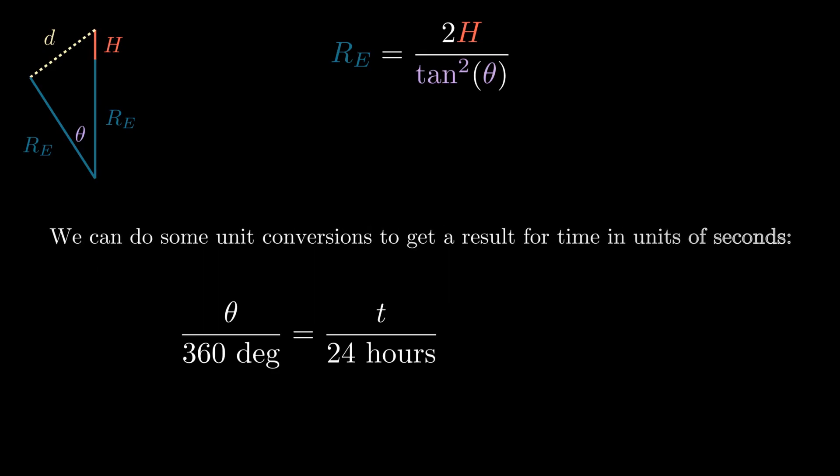Since our stopwatch time is in seconds, we can do some unit conversions to get a result for the time in this equation in units of seconds. There are 60 minutes in an hour and 60 seconds in a minute, so we are multiplying by 1 here, which we can do any time we like.